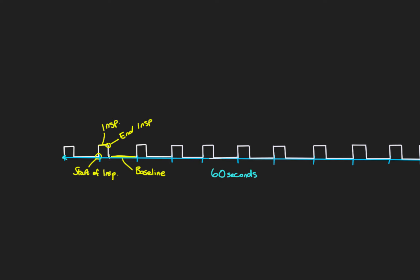I just want to add one thing to the baseline comment: it is acceptable to call this a baseline phase, but it may be easier to also view this as the expiratory phase. When looking at pressure, it makes sense to call it a baseline because it is a baseline pressure in the circuit. But this really is the expiratory phase. So let's label those — in pink for expiration, and green for inspiration.